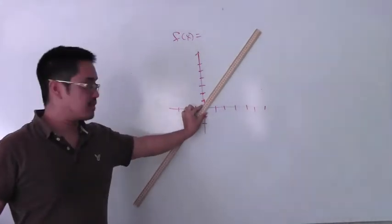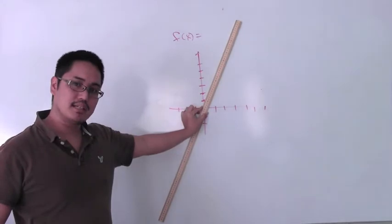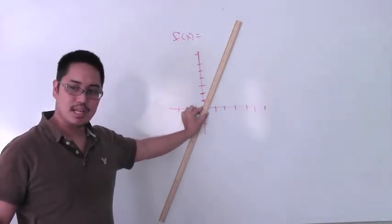If f of x equals 2x, it kind of looks like this. A little bit more like that. If f of x equals 3x, what does that look like?